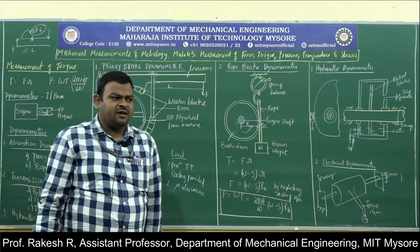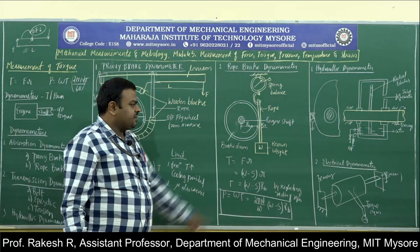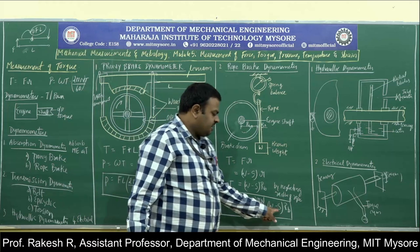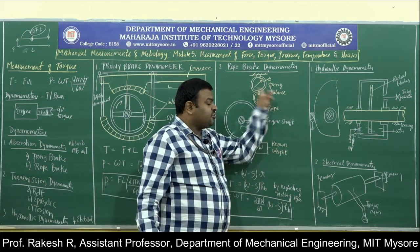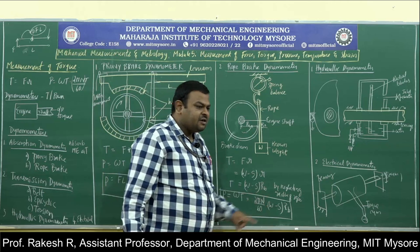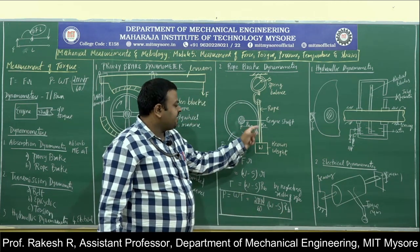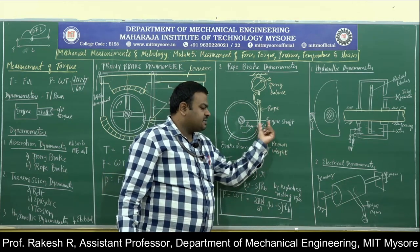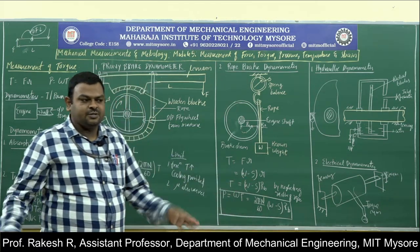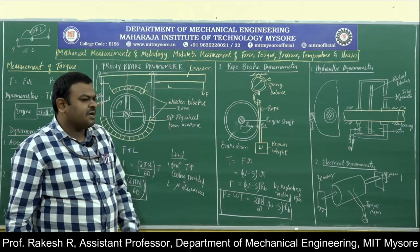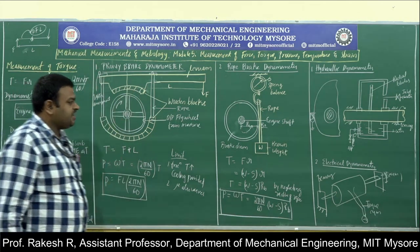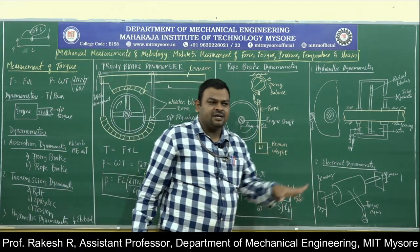Power is P = ω × T = (2πN/60) × (W − S) × Rb. This is the equation for power in the rope brake dynamometer, where mechanical energy is absorbed. An important condition: the spring weight must be less than the known weight, otherwise the equilibrium condition is not satisfied. Rope radius is neglected because it is small compared to brake drum radius.